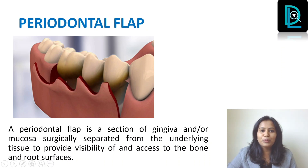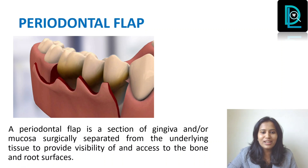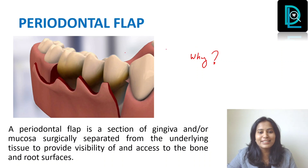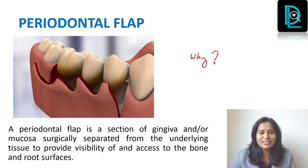First of all, what do you mean by a flap? As you can see in the picture, it is just a section of gingiva or the oral mucosa which is surgically separated from the underlying tissue. Why do you need to separate it? To gain access to the underlying bone surface or root surface, to do whatever surgery you are supposed to do — correct the bone deformity or do a periodontal surgical procedure for pocket therapy. So all those are indications of your periodontal flap.